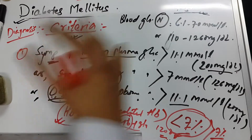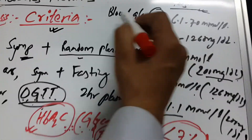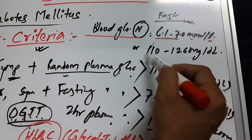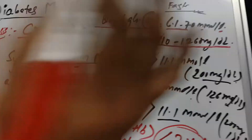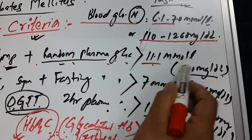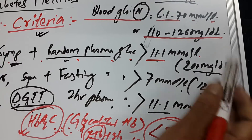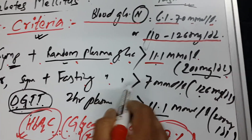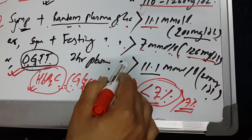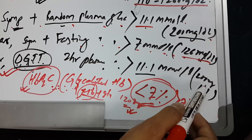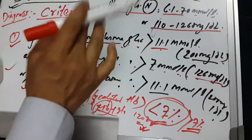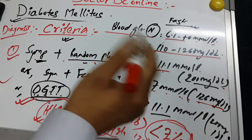To wrap up: normal blood glucose level is 6.1 to 7.0 mmol/L or 110 to 126 mg/dL. The first diagnostic criterion is symptoms plus random plasma glucose more than 11.1 mmol/L or 200 mg/dL. These are the criteria for diabetes mellitus. In the next video, we will discuss its treatment.